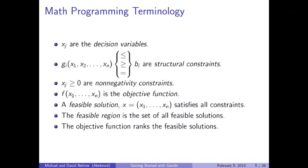Constraints that involve functions of more than one variable — the G_i greater than, less than, or equal to B_i — are called structural constraints, which we distinguish from non-negativity constraints that involve only a single variable. A feasible solution is a list of values satisfying all constraints, both structural and non-negativity. The objective function ranks feasible solutions by returning a number that gives a measure of the quality of that solution. Popular candidates for objective functions are cost or profit functions.